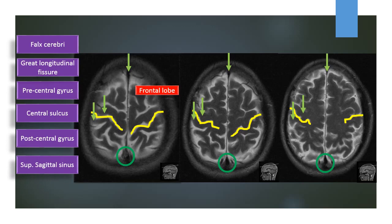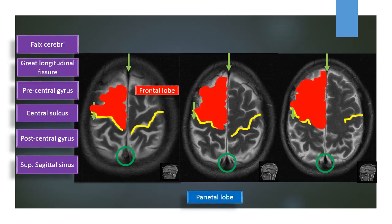The frontal lobe is located in front of the central sulcus, and the parietal lobe is located behind the central sulcus.